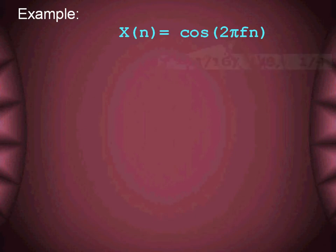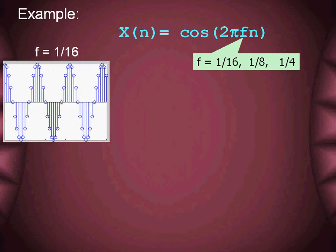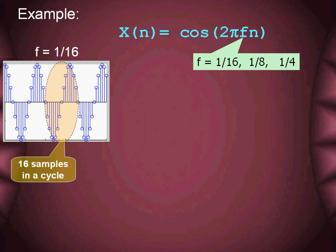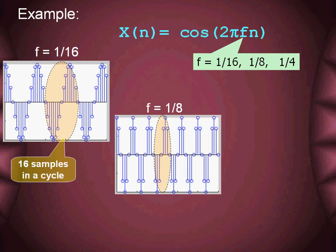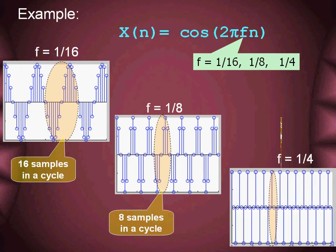This dimension of cycles per sample is illustrated using the discrete sinusoidal signal for different values of digital frequency. A frequency value of 1/16 indicates a discrete periodic signal consisting of 16 samples in one cycle. Similarly, a frequency of 1/8 indicates a sequence with 8 samples per cycle, whereas a frequency of 1/4 specifies only 4 samples per cycle.